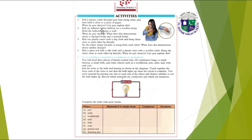Rub an inflated rubber balloon on a woolen jersey and hold the balloon against a wall. What do you observe? What does this demonstrate about a charged body and a neutral body? Rub two plastic rulers with a dry cloth and hang them close to each other by threads — do the rulers swing towards or away from each other? Rub a glass rod with silk cloth and a plastic ruler with woolen cloth, hang them close to each other by threads and observe whether they attract or repel.